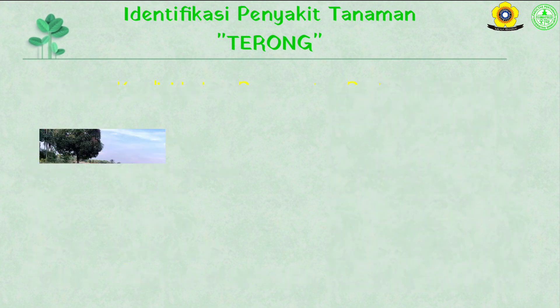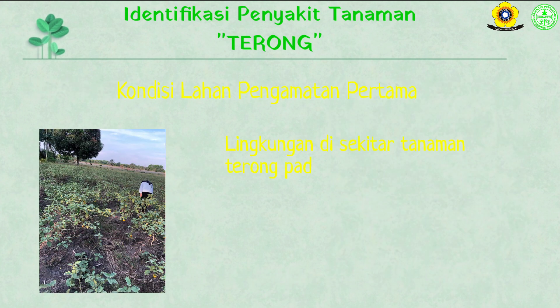Kondisi pengamatan lahan pertama: lingkungan di sekitar tanaman terong pada pengamatan pertama cukup bersih, terawat, dan juga dibersihkan. Ini sangat terlihat jelas di sekitar atau kelilingnya tidak ada gulma.